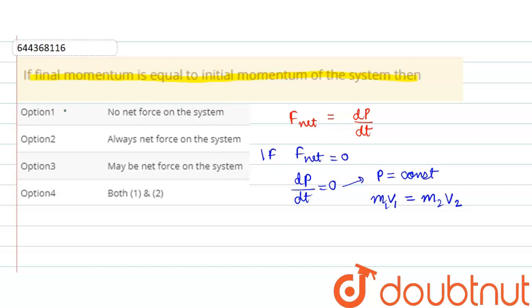Option two says always net force on the system, so this is wrong, as if net force is acting on the system, momentum couldn't be conserved. Option three says may be net force on the system, so this is also wrong. Hence we can say that option one for this question is the correct one.